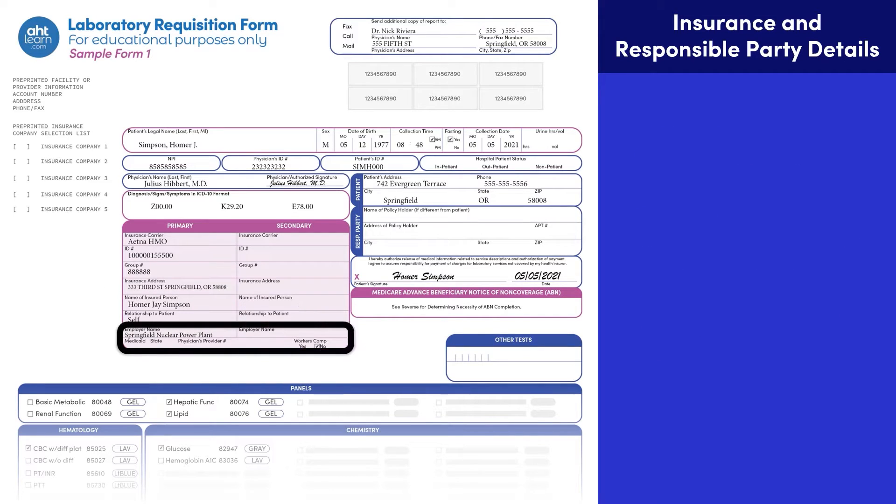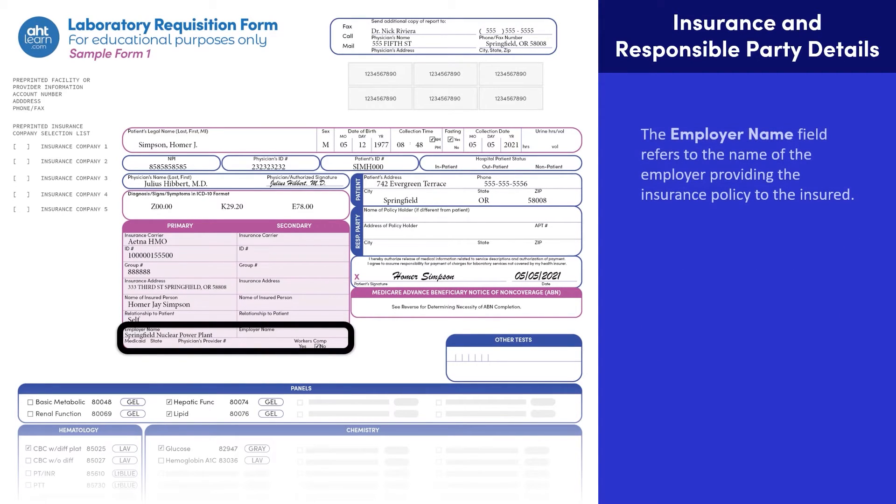If the patient is the policyholder, the patient is considered self-insured. If the patient is covered under someone else's policy, the patient is considered a dependent, and their relationship, such as a spouse, must be identified. The employer name field refers to the name of the employer providing the insurance policy to the insured.